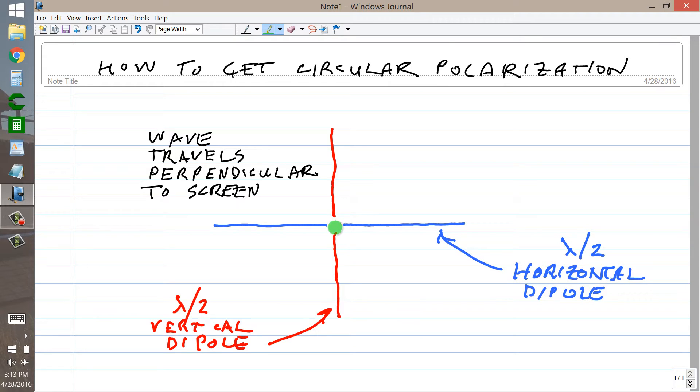Notice that I have left gaps at the feed points, and there is an important reason for doing that. In order to get a circularly polarized wave, you must feed these two antennas 90 degrees out of phase with each other. That is to say, in phase quadrature.